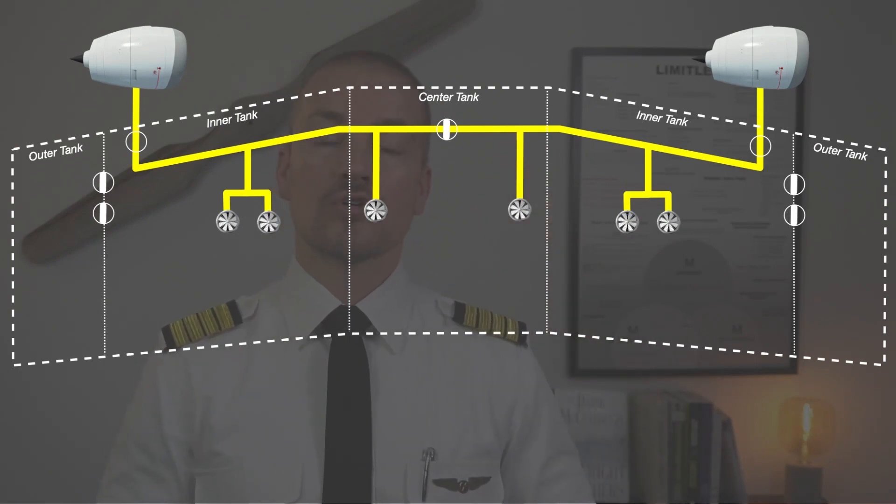Should it become necessary, this two-way cross feed valve can allow fuel to be taken from the opposite side to feed one engine only. We use this if we have an engine failure to ensure we don't get any imbalance on the aircraft.